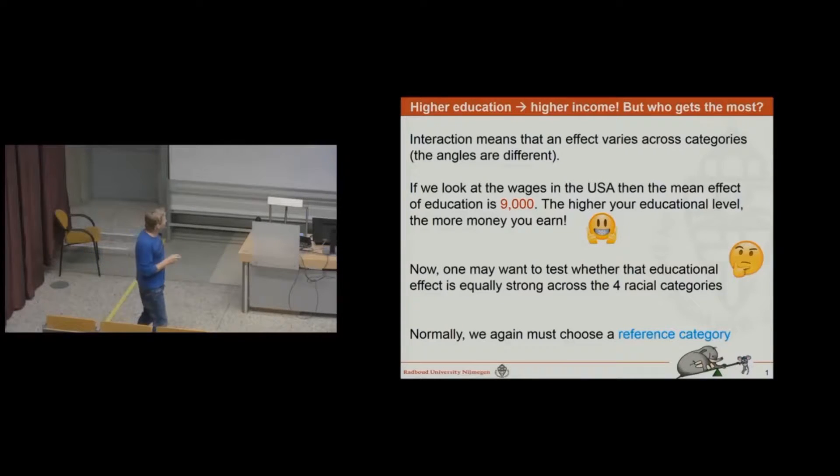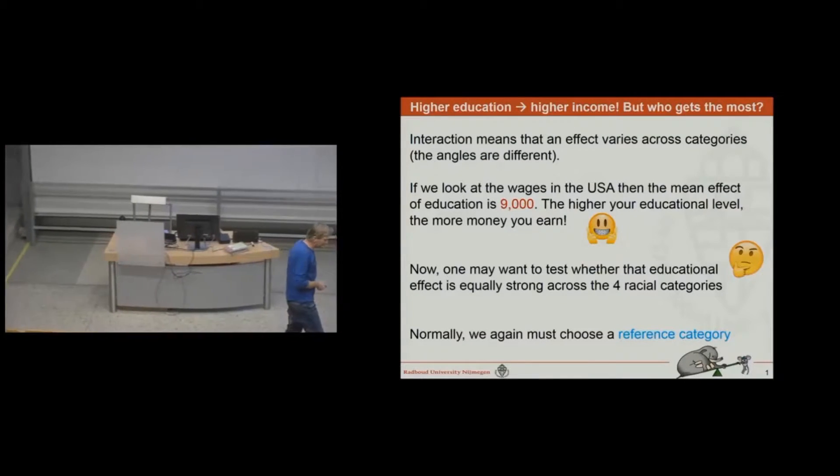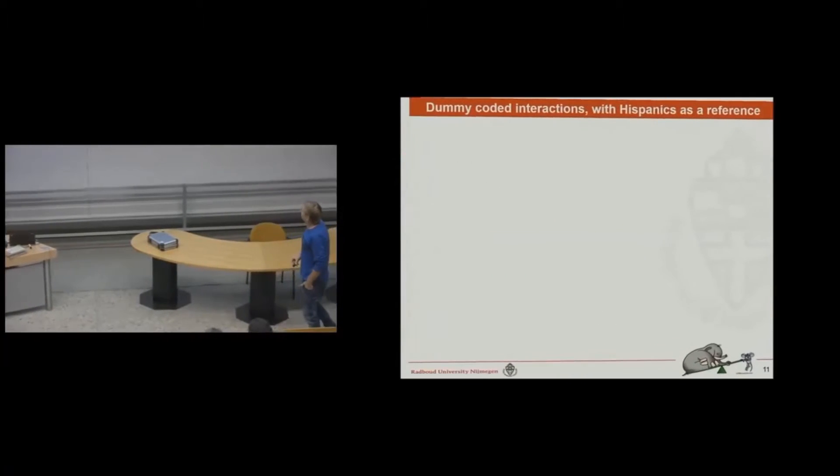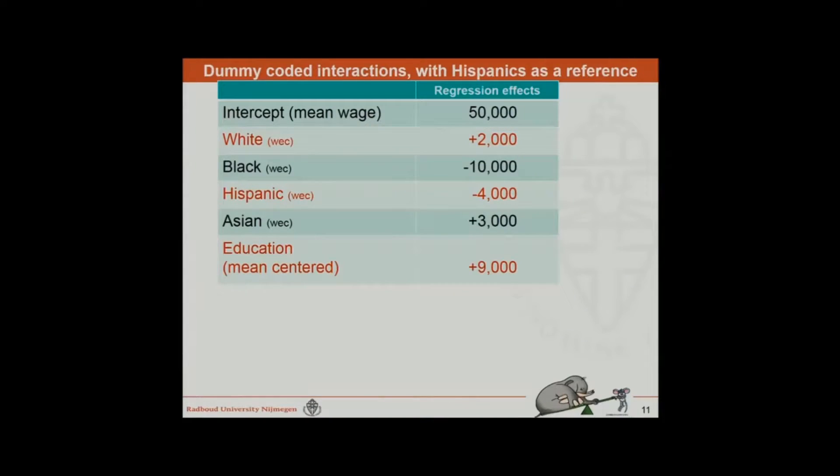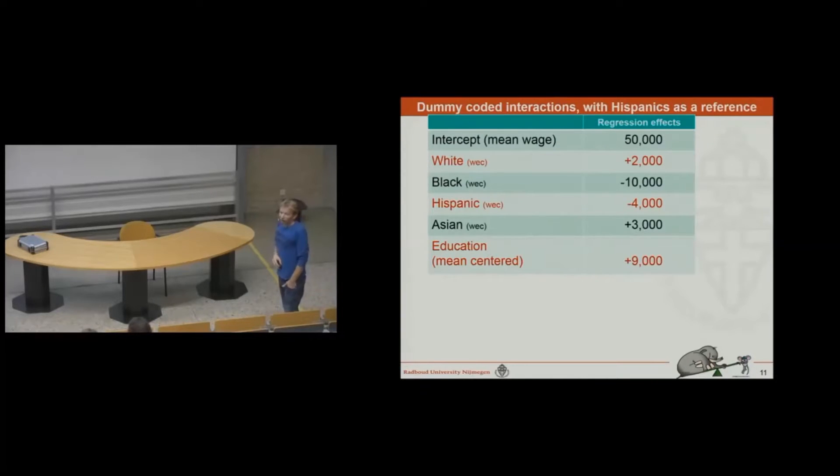Now, at the danger of repeating myself, we have to choose a reference category again. We have to choose one of the four categories to come up with the estimates. If we use dummy coded interaction, we get something like this. This is a table with education entered as well in the equation. I have whites, blacks, Hispanics and Asians and there are weighted effect coded, right? Because all the numbers are different. And we have here the $50,000, which is the sample mean. And these are all deviations from that sample mean and we have our $9,000 educational effect over here.